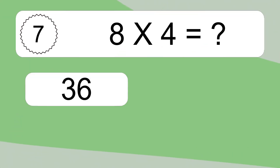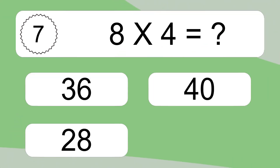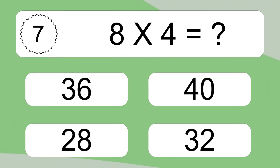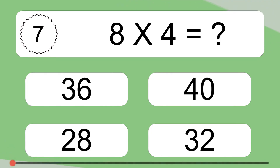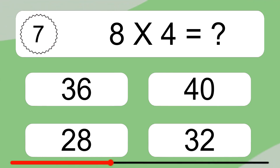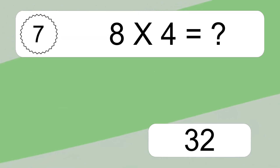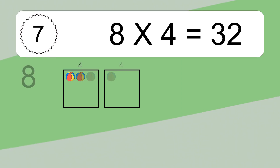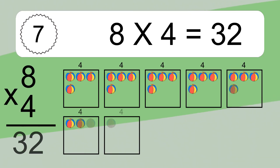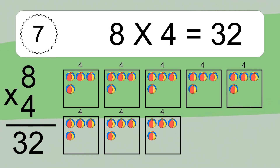8 times 4 equals what? 8 times 4 equals 32.